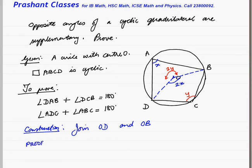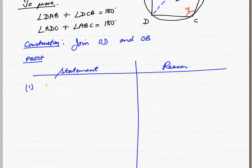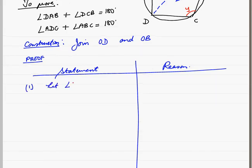Proof. Statement and reason. Statement 1: Let angle DAB be X, angle DCB be Y.